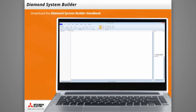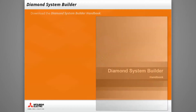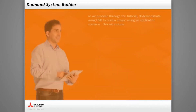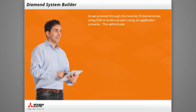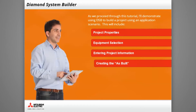Once you have DSB, you may wish to download the Diamond System Builder Handbook. It can be found on the Help tab. Use it as a reference guide as you work with the software. As we proceed through this tutorial, I'll demonstrate using DSB to build a project using an application scenario. This will include project properties, selecting equipment, entering project information, and creating the as-built.